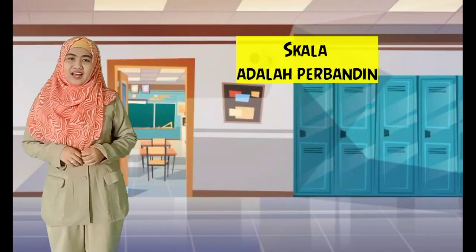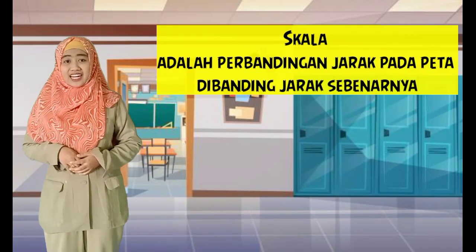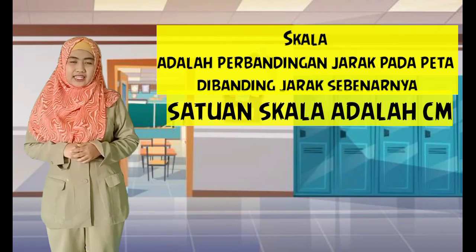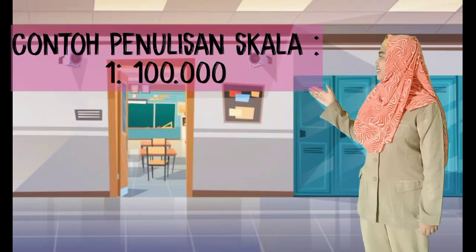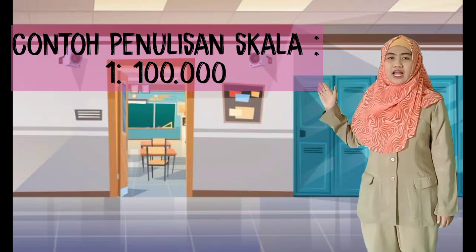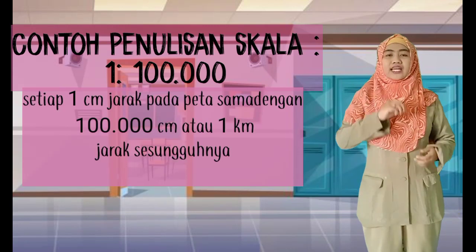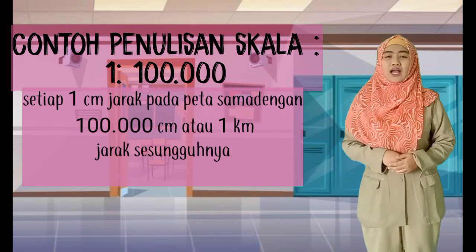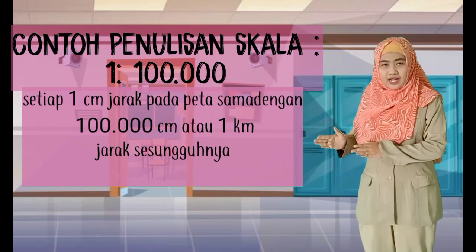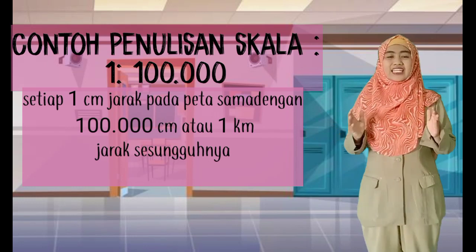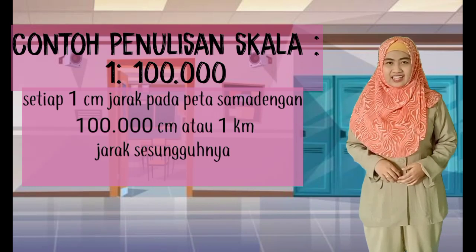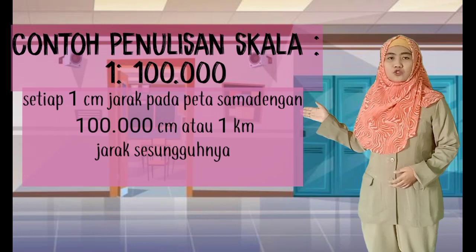Skala adalah perbandingan jarak pada peta dibanding dengan jarak sebenarnya. Satuan dari skala sendiri adalah cm. Contoh penulisan skala adalah seperti ini: 1 dibanding 100 ribu. Maksud dari penulisan ini adalah setiap 1 cm pada peta mewakili 100 ribu cm atau 1 km pada kenyataan yang sebenarnya.